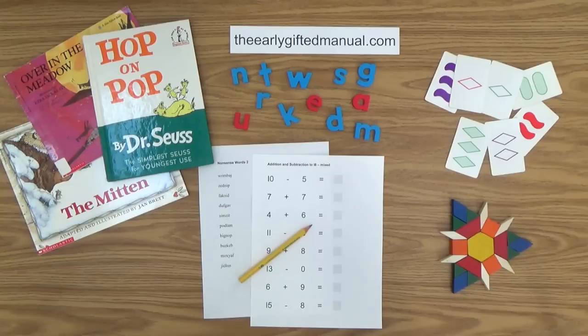As the video lessons are designed to work in conjunction with the program on my website, I ask you to, at some point, click on the URL link in the description box below, and this action will take you to theearlygiftedmanual.com. By doing that, you will be able to put this lesson and all of the video lessons here on my channel in the proper context of the total program that I am presenting to you and your child.